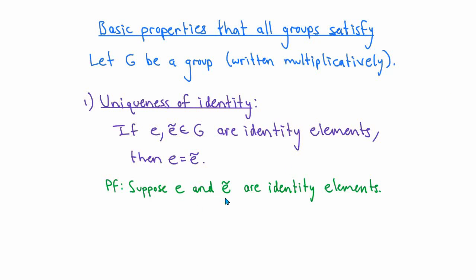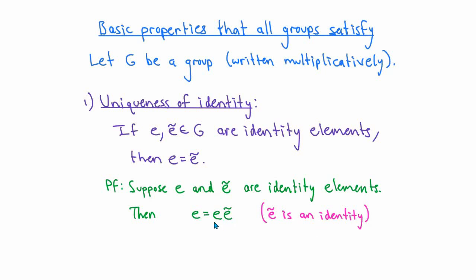To prove uniqueness of identity, suppose that I have two identity elements e and e-tilde. Since e-tilde is an identity element, if I multiply e times e-tilde, it's not going to change e, so e must equal e times e-tilde. Now, since e is also an identity element, when I multiply e times e-tilde it doesn't change e-tilde either. So I conclude that e must be equal to e-tilde, and that proves the uniqueness of the identity element in a group.